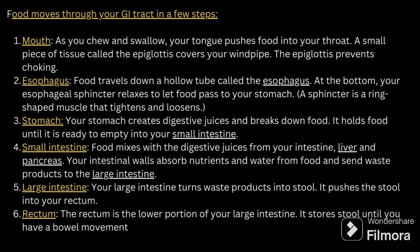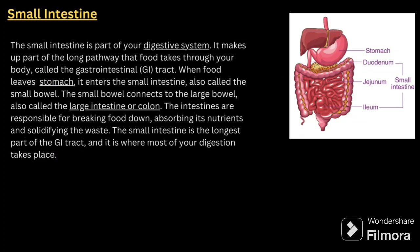Food moves through the GI tract in steps: first in the mouth — swallowing and mixing — then through the esophagus where the esophageal sphincter releases food into the stomach. The stomach creates digestive juices and breaks down the food. In the small intestine, food mixes with digestive juices from the liver and pancreas and nutrients are absorbed. The large intestine turns waste products into stool, and the rectum stores the stool until the bowel fills.